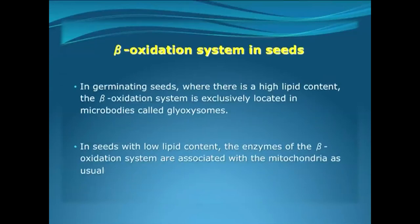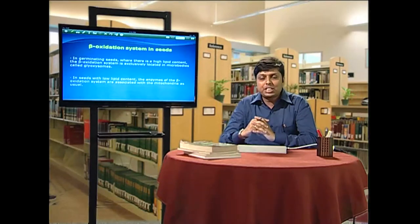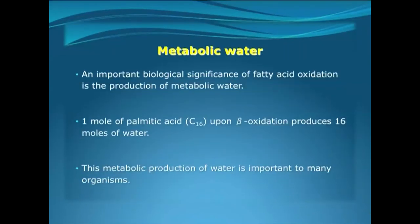Coming to the beta-oxidation system in seeds. In plant seeds which contain a lot of free fatty acids and are very lipid-rich, the enzymes of the beta-oxidation pathway are induced and present in high amounts, and the beta-oxidation pathway takes place in the micro-bodies known as the glyoxysomes. But in seeds in which lipids are not present in such high amounts, the beta-oxidation pathway takes place in the mitochondria as usual.